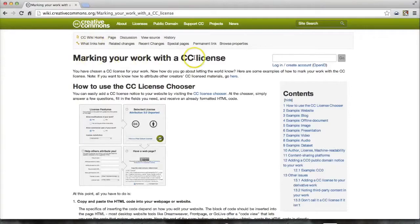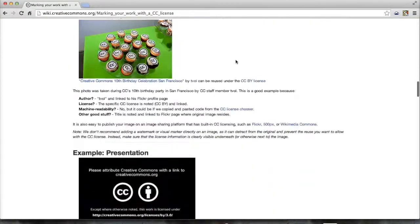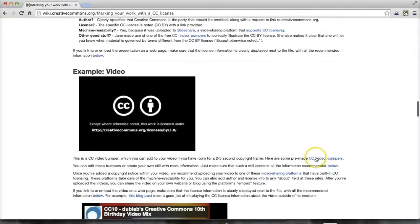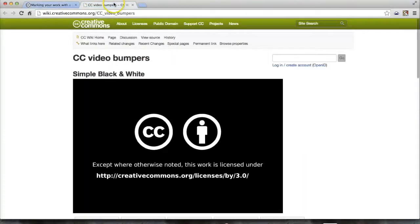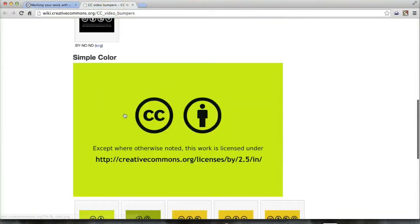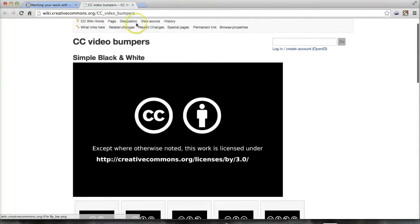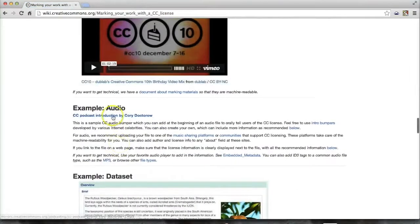You can also go to the Creative Commons website and find the CC video bumpers. These are slides made by CC to visually and clearly state the license you are using, and you can add these to the end of your presentation or video.